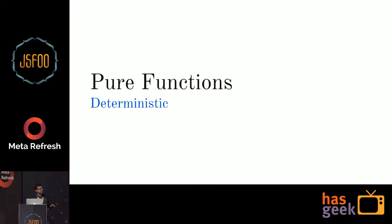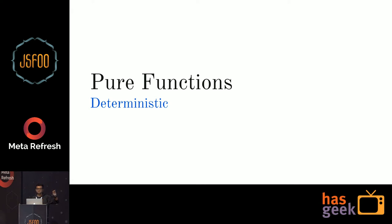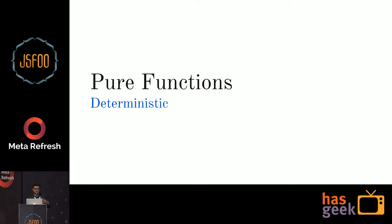I'd like to quickly touch on pure functions. Pure functions are functions that work with immutable data structures — you give some input, it does some operation, and it is not allowed to update the input. It returns outputs and has no side effects. If your function uses immutable data structures it becomes deterministic — a fancy term meaning it will always return the same output for the same input, whatever happens in your application. If we have functions like this, they are easily testable, and you can write easy test cases.